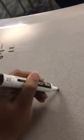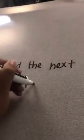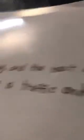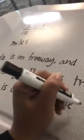I'm on the freeway and the next exit is five-twelfths of a mile away. So let's say there's a lot of traffic and we're going really slow. And because we're going so slow, Ms. Avila is driving one-sixth of a mile per hour.